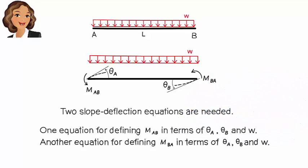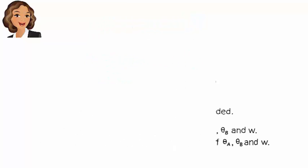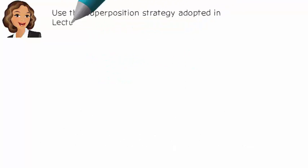To get these equations, we are going to employ the superposition strategy we adopted in the previous lecture. We start by writing end rotations for a simply supported beam under three separate loading cases, then superimpose the three cases to arrive at our target equations.